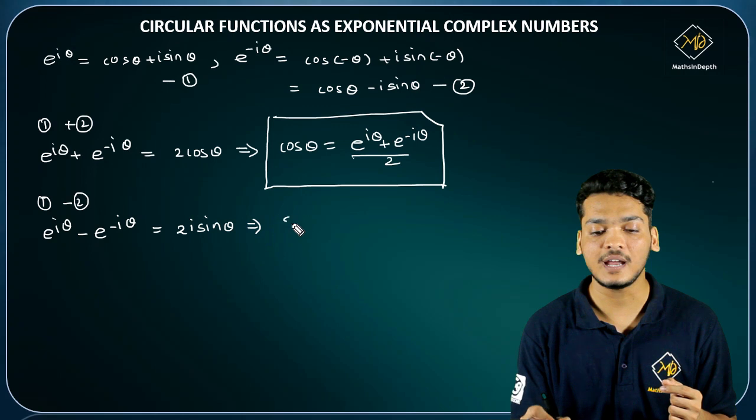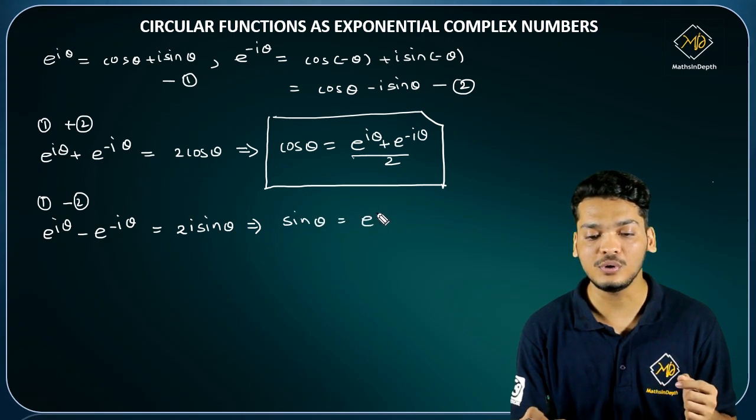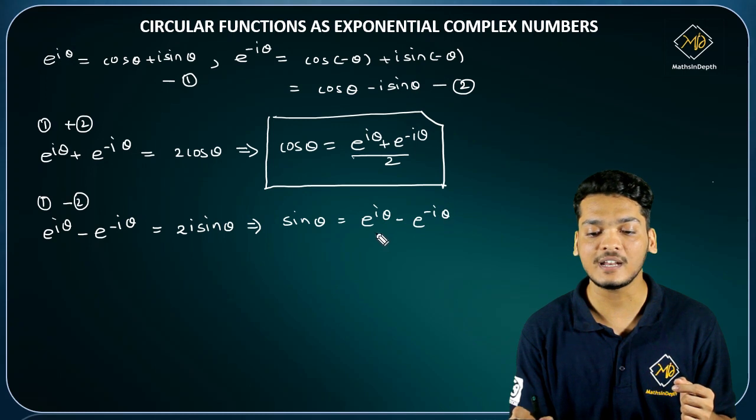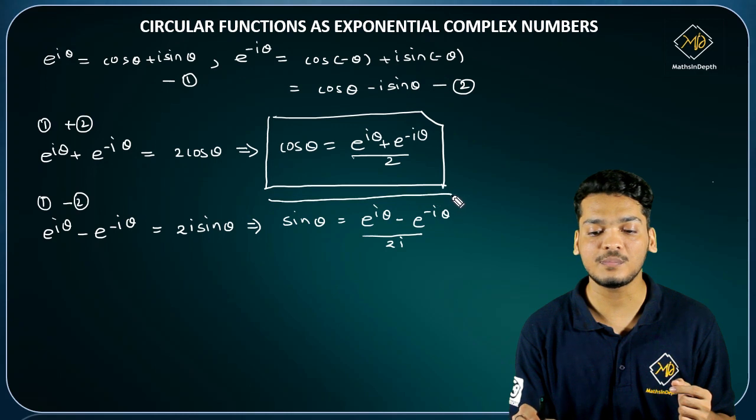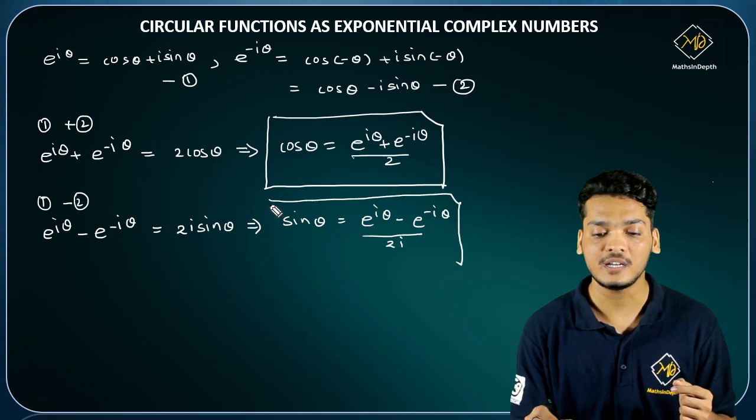This implies that sin theta equals e raised to i theta minus e raised to minus i theta divided by 2i, and this is known as the exponential complex number formula for sin theta.